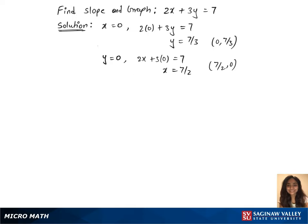Now we have two points. We can find the slope now, which is m equals y2 minus y1 over x2 minus x1. The first point is x1, y1 and the second point is x2, y2.